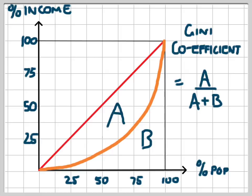If that orange line moved closer and closer to the line of perfect equality, to the point where the area A equaled 0, then the Gini coefficient would be 0 divided by A plus B, and that would give us a Gini coefficient of 0.